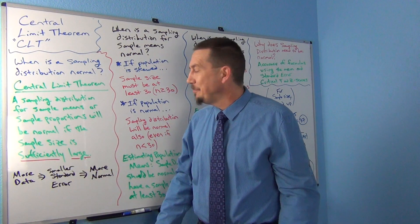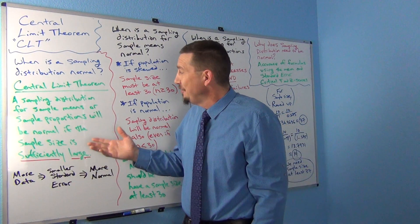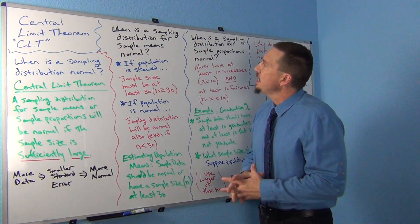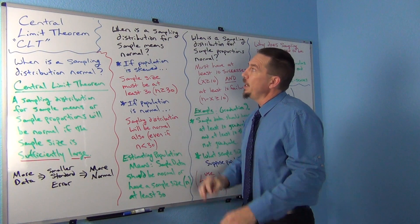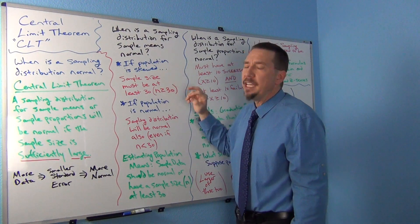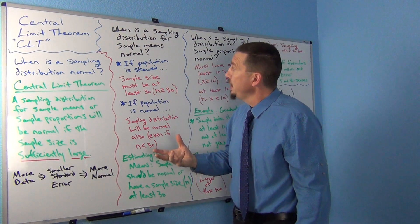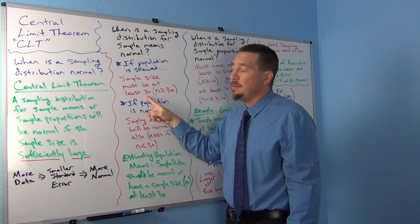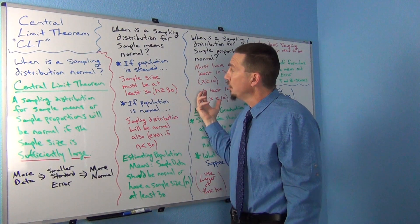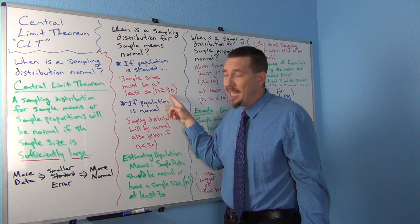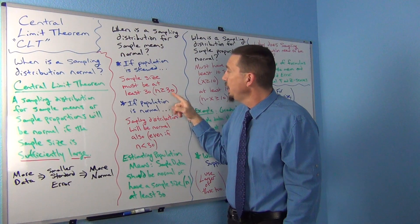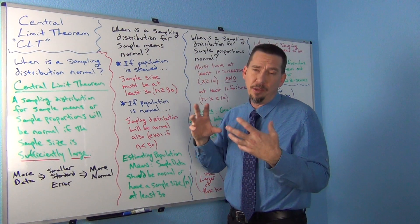But what does 'sufficiently large' actually mean in practice? What is sufficiently large for sample means or sample proportions? For sample means, there are two cases. If the population was skewed, we really want the sample size to be at least 30. When we used a sample size of 10 from a skewed population in our last video, we saw that the sampling distribution still looked skewed. But when we got to 30 or above, the sampling distribution started to look more and more normal.